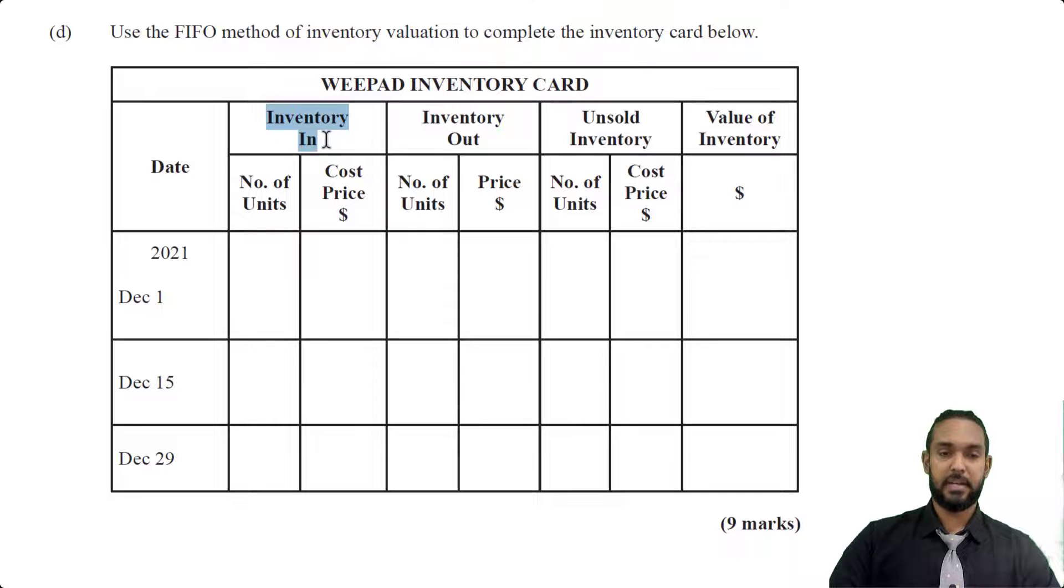So inventory in, that's the purchases. So we have number of units and the cost price. And we have inventory out, that's the sales. And again, number of units and selling price. And then we have unsold inventory. So whatever remains at the end of each day, number of units and cost price and any value of inventory. So let's go back up to the table with the information and start populating the solution.